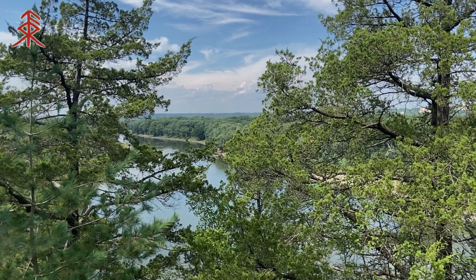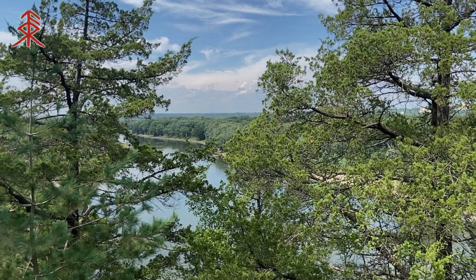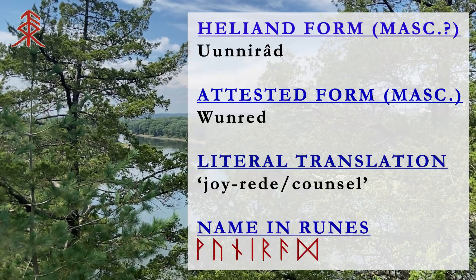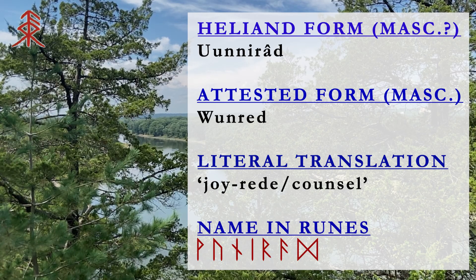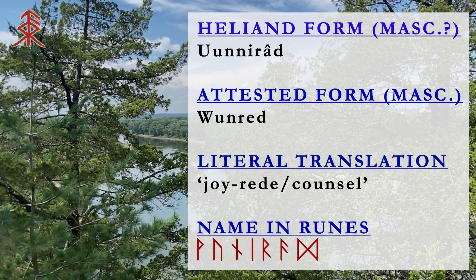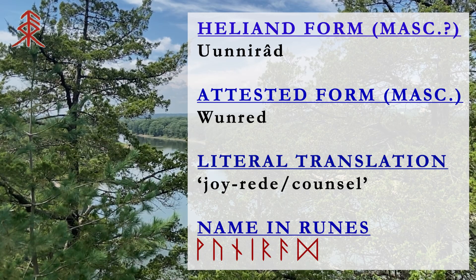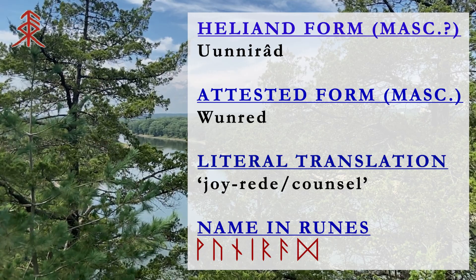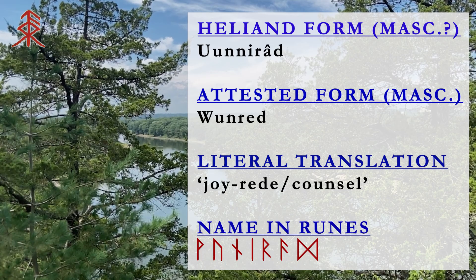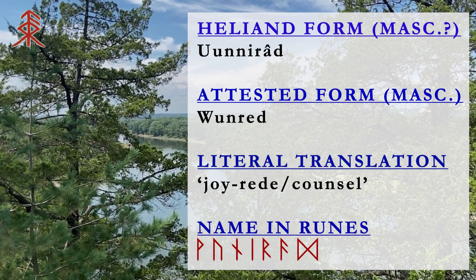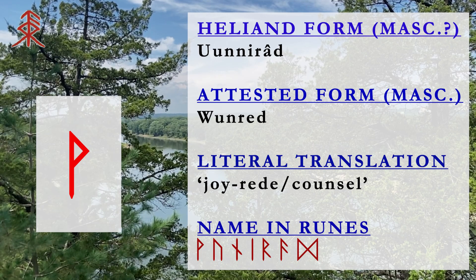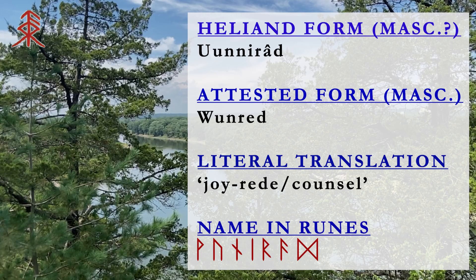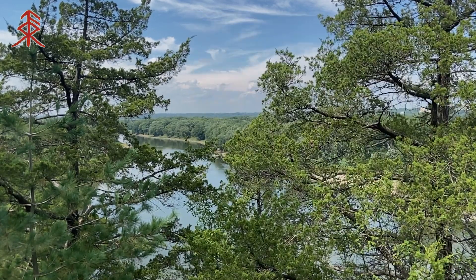Our very last, ninth name in this entire series is going to be Wunirad — literally 'joy counsel.' This name was specifically recorded for a man, though the reconstructed form could be for either a male or a female, similar to the Alex/Alexandria/Alexander or Angel/Angela/Angelo situation. This is a name for someone who gives good counsel and evokes happiness — someone who is joyful, harmonious, and hopeful. Wuni here is directly connected to Proto-Germanic 'Wuno,' and this disposition is connected to 'Rat' in that this is someone who offers counsel with the intent of bringing harmony during conflicts.